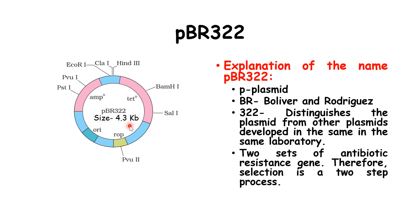PBR 322 contains two sets of antibiotic resistance genes: ampicillin resistance and tetracycline resistance. It contains cloning sites in the ampicillin resistance gene for PST1 and PVU1, and also cloning sites for EcoR1, CLA1, and HIND3. In the tetracycline resistance gene, there are cloning sites for BAMH1 and SAL1, and there is also a cloning site for PVU2. Practice the diagram of PBR 322 to remember all the cloning sites.